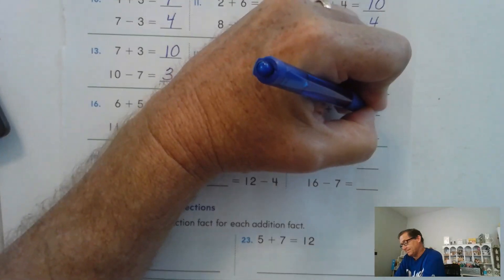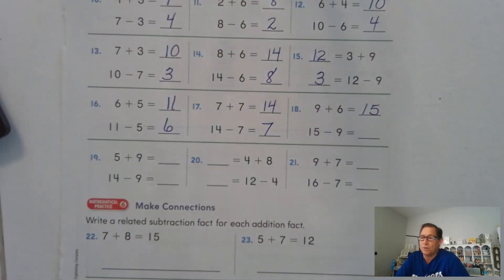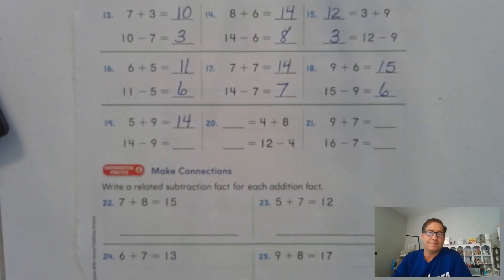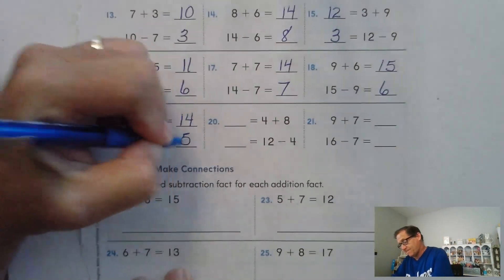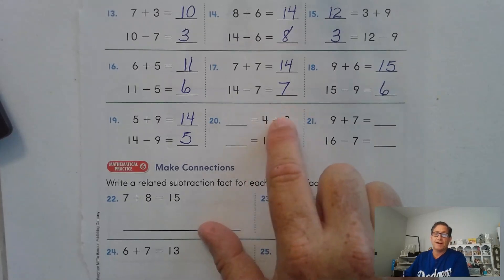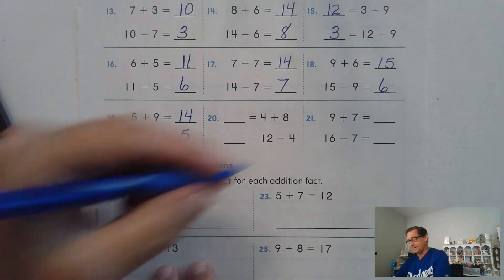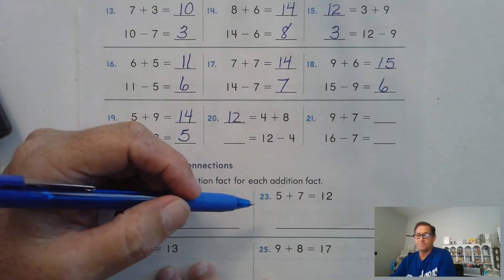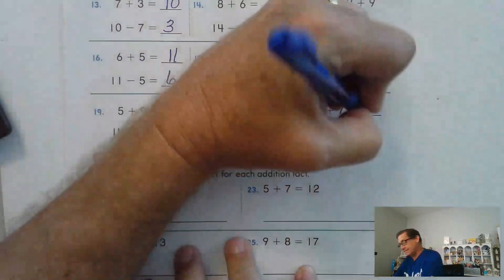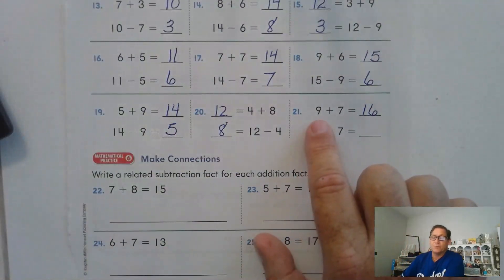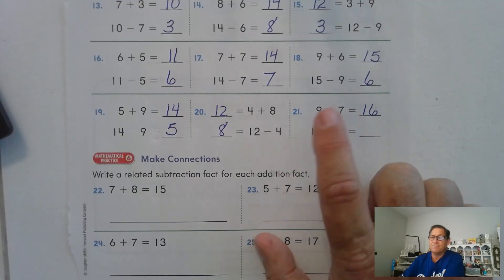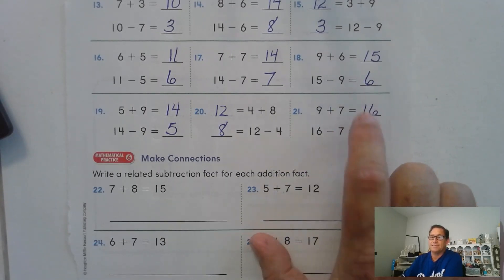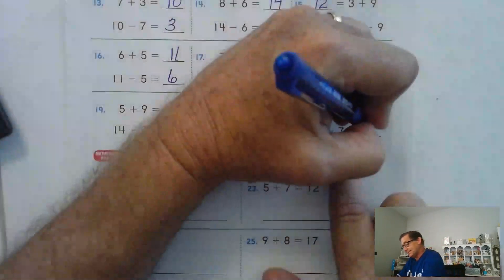Nine plus six is 15. So 15 take away nine: nine plus what is 15? Six. Five plus nine is 14. So 14 take away nine: nine plus what is 14? Five. We have the problem on the right-hand side; we just put the sum on the left-hand side. Eight and four more is 12. And 12 minus four: four plus what is 12? Eight. Nine plus seven is 16 — seven plus seven is 14, add two more because nine is two more than seven, so 16. 16 take away seven: seven plus what is 16? Nine.